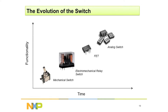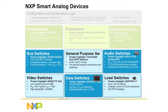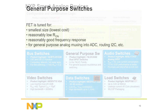So that takes us to the next stage of the evolution of the switch. From a simple FET, we look at something called the analog switch. An analog switch is a series of FETs put together into a single package to simplify the design and make it smaller and more convenient. NXP builds a wide variety of switches — they're all fundamentally the same, all fundamentally a FET inside, but each has been tuned for a specific application.